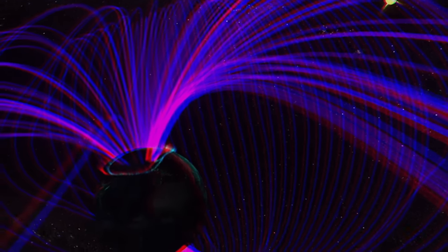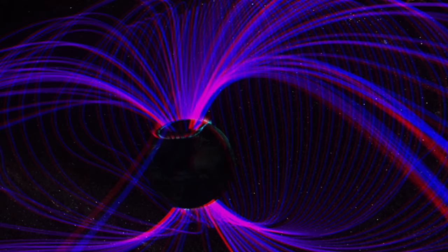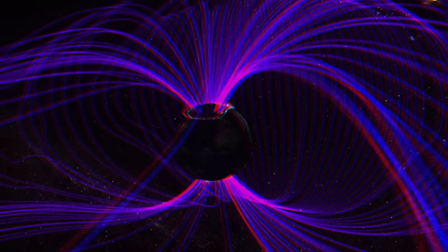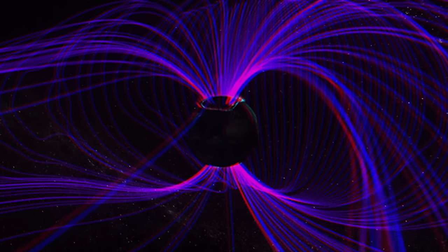Nicola Fox knows the shield like her own backyard. The Sun gives us everything that we need to be able to survive here on Earth. But equally, it could take that all away in a split second if we didn't have the magnetosphere to protect us.